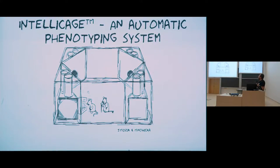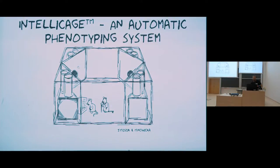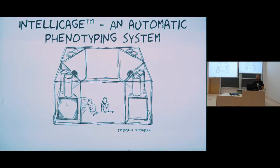The IntelliCage system is a housing cage in which there is a group of animals. All tests are performed in the housing cage, so there is no novelty stress as animals are in a familiar environment. Because they are group-housed and group-tested, there is also no isolation stress. An important part of the system are four conditioning chambers located in the corners.